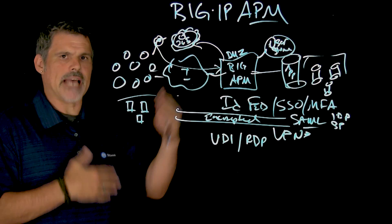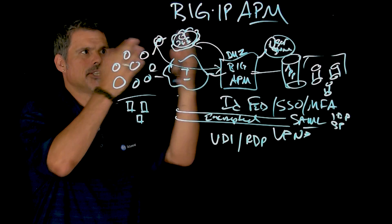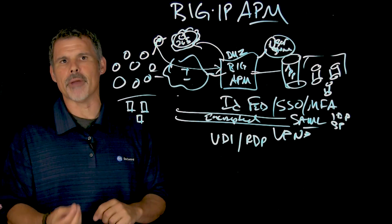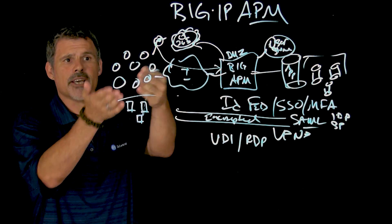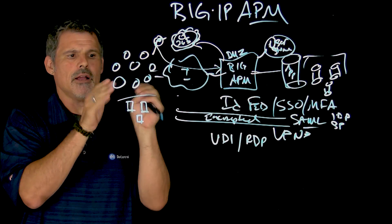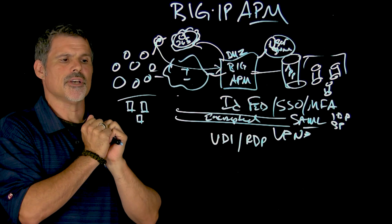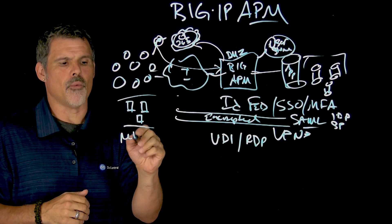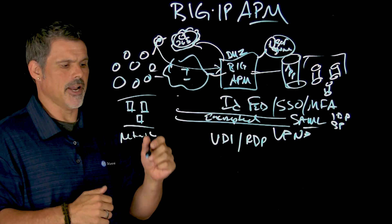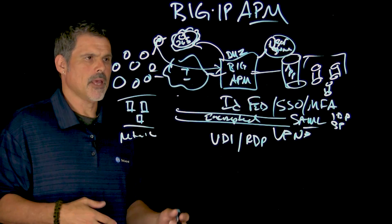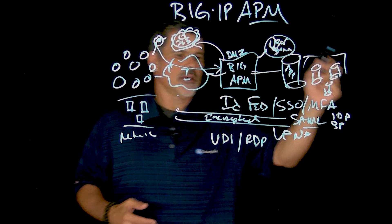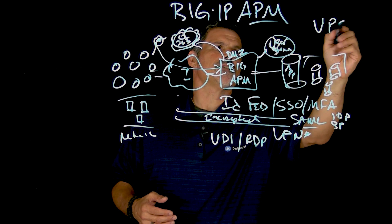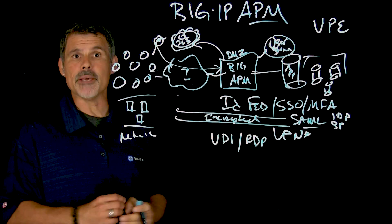Now, how do you manage all this? How do you create and manage these policies to determine the level of access given who the people are, the type of devices that they're requesting access from, and even potentially the networks that they're on and additional criteria? And that's with what's called the Visual Policy Editor or the VPE.